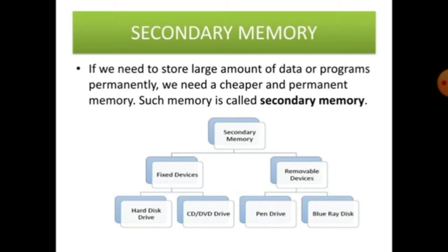Secondary memory - If we need to store large amount of data or programs permanently, we need a cheaper or permanent memory, such as secondary memory. Here again, secondary memory is divided into two parts: first is fixed devices, second is removable devices. Fixed device examples include hard disk drive, CD, DVD drive, whereas the removable devices like pen drive, Blu-ray disk.